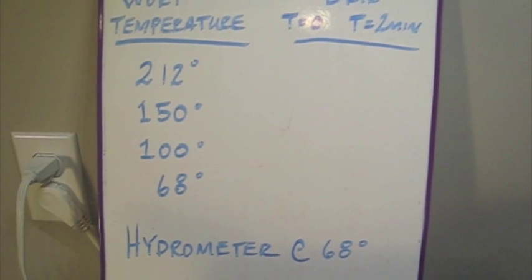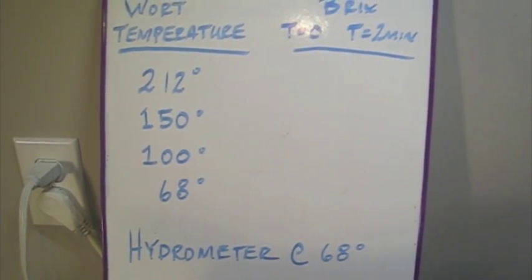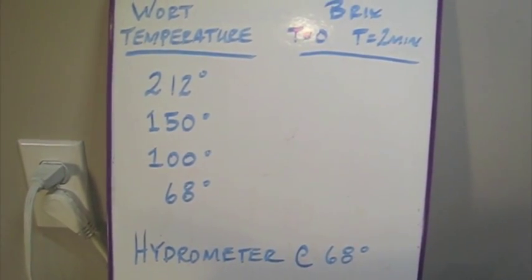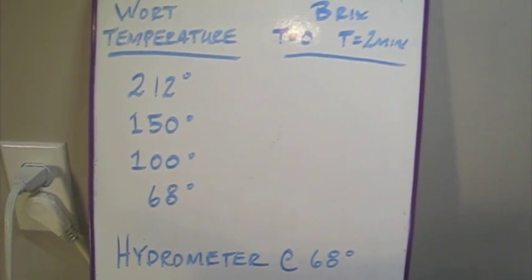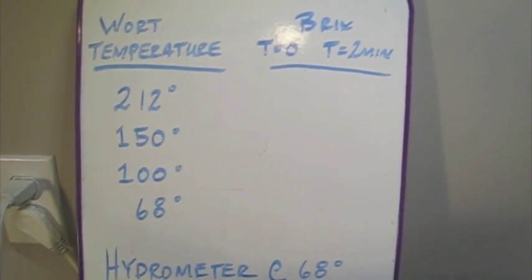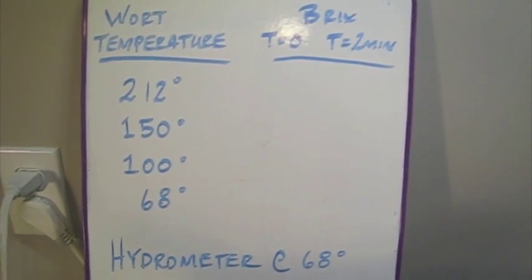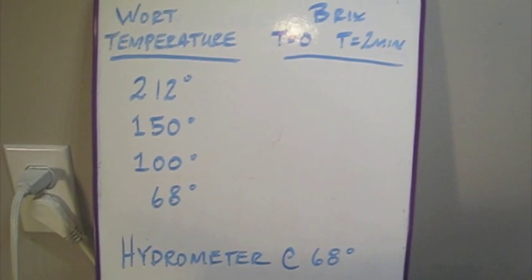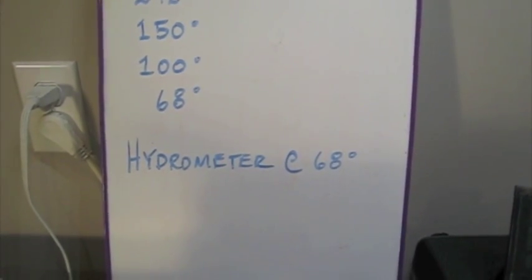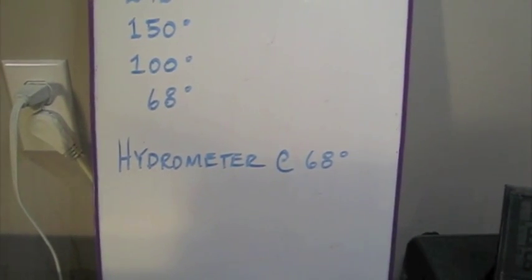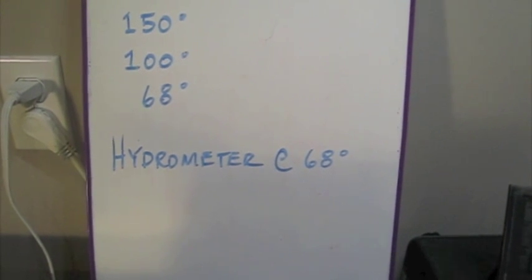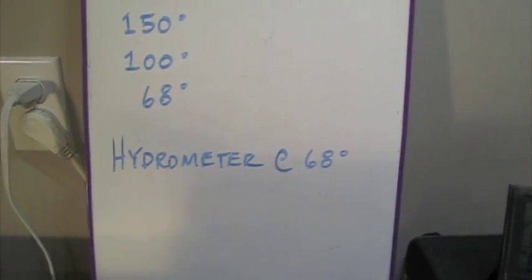You'll see the process will be to heat the wort up to boiling, take an immediate sample, let that sample cool a couple minutes, log both those data points. As the wort cools down, repeat that process. I'll also be taking the hydrometer reading of the sample so we can measure against it.